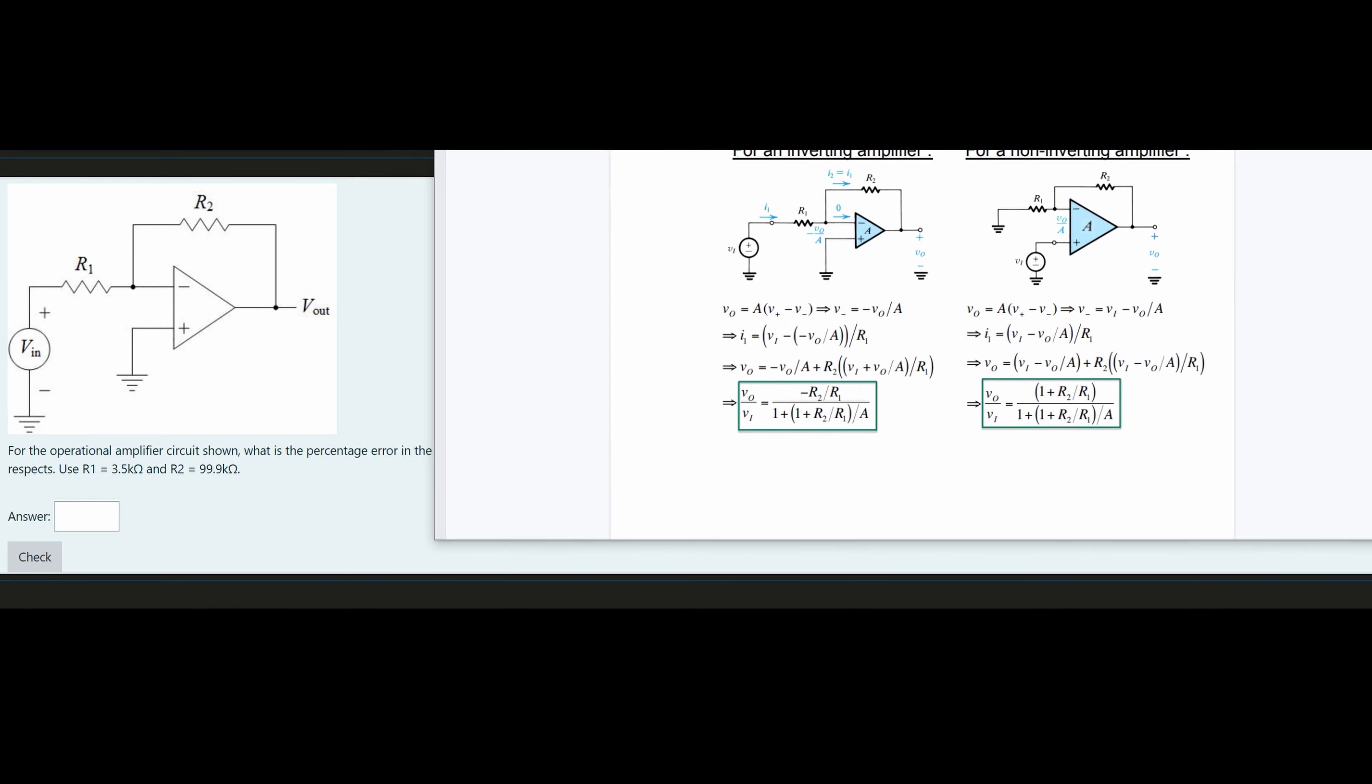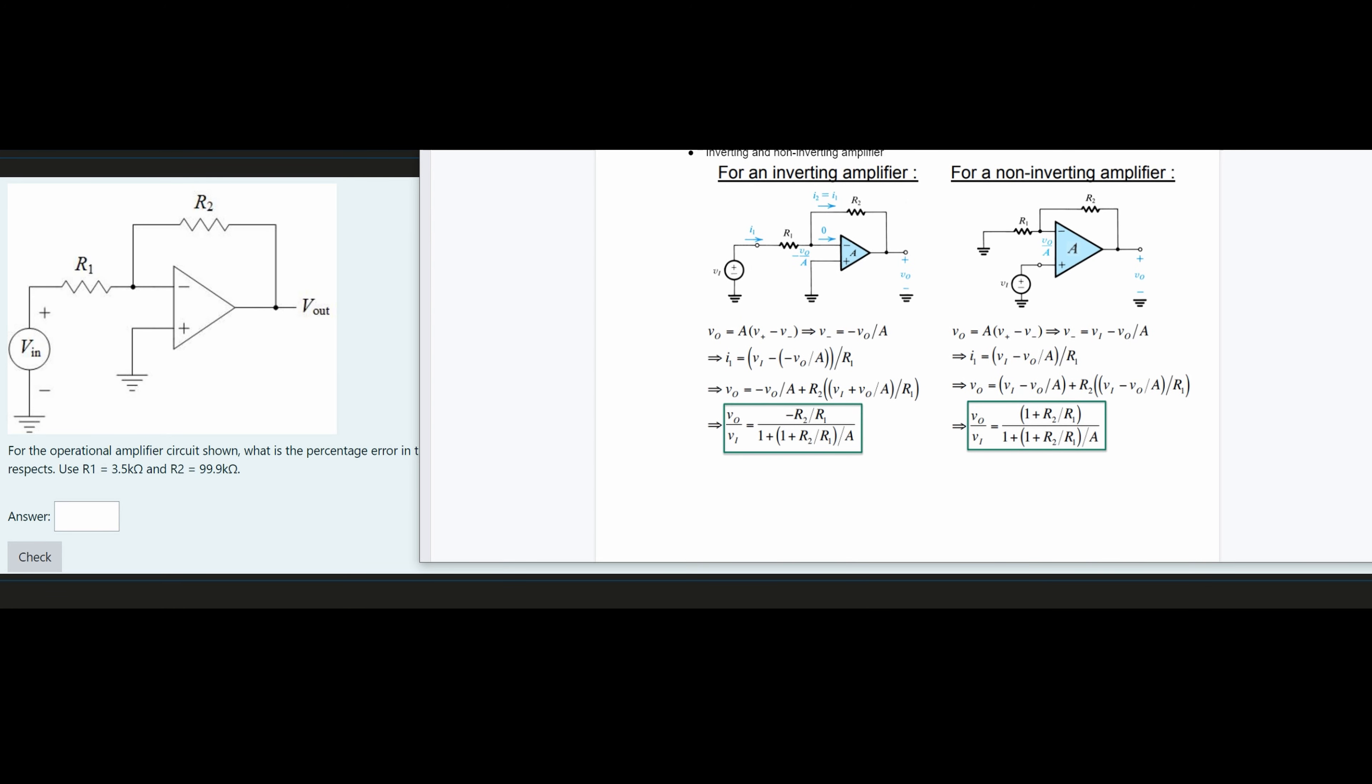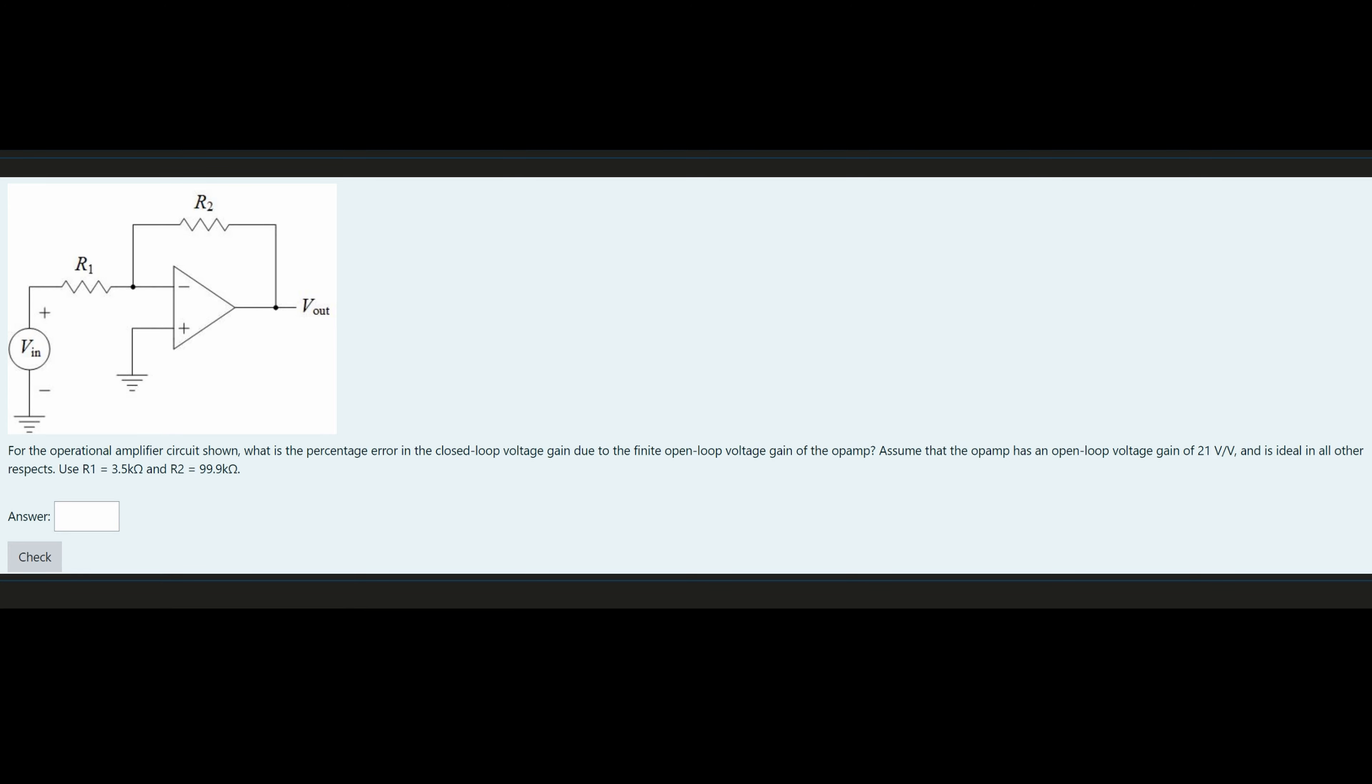For this problem, we have an operational amplifier circuit shown. We're asked, what is the percentage error in the closed loop voltage gain due to the finite open loop voltage gain of our op amp?